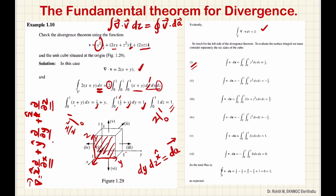Taking the dot product of the vector function with the area element x̂ dy dz: only the x-component survives, giving y² (since x cap · x cap = 1). So the contribution is ∫∫ y² dy dz with limits 0 to 1, which evaluates to 1/3.